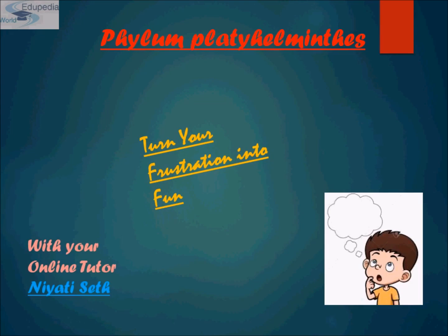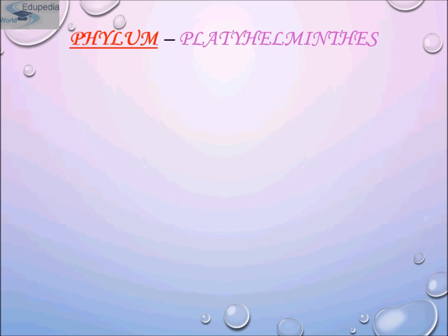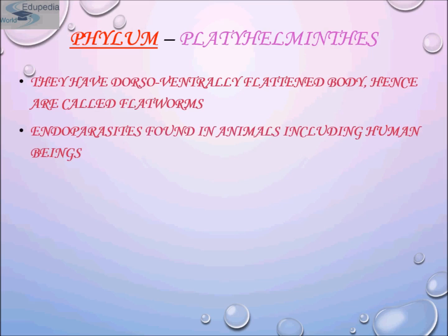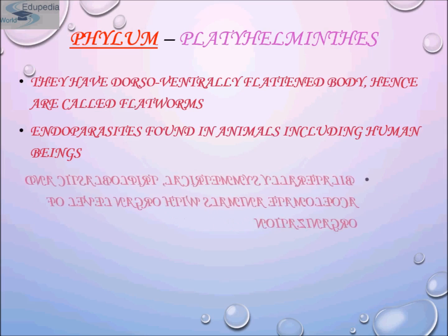Phylum Platyhelminthes contains around 29,000 described species of soft-bodied animals with bilateral symmetry, commonly called flatworms. They have a dorsal-ventrally flattened body, hence they are called flatworms.